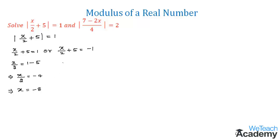Now finding x for the case x/2 + 5 = -1: transferring +5 to the other side gives x/2 = -1 - 5 = -6. Cross multiplying, we get x = -12. So the two values of x for the first equation are -8 and -12.